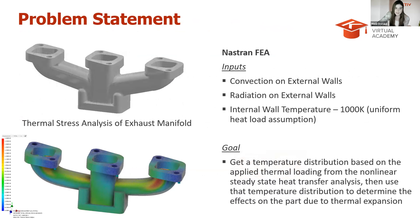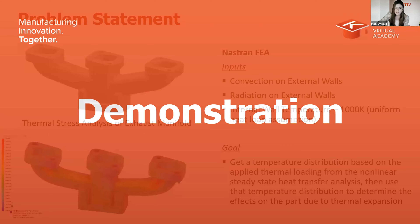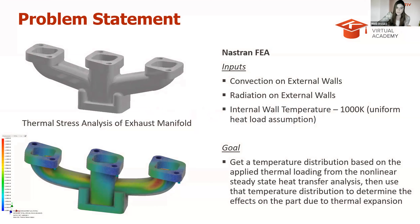For our FEA today, we're going to be conducting a heat transfer and thermal stress analysis on this exhaust manifold. To summarize what I'll be doing in Nastran — I'll first be applying convection and radiation to the external walls of the manifold, then assuming the manifold's internal wall temperature to be uniform at around 1000 Kelvin. Assuming a uniform temperature isn't the most accurate, as this isn't what happens in the real world, but a mechanical design engineer will likely not need highly accurate results — just a rough idea of where the model may fail.